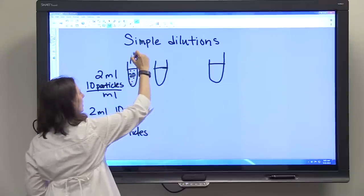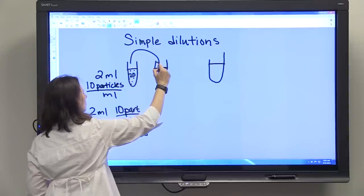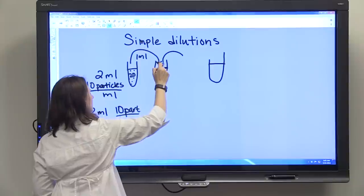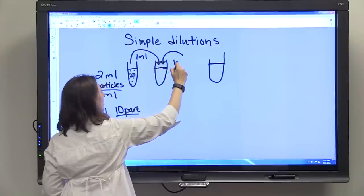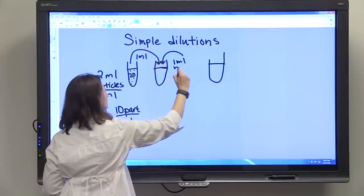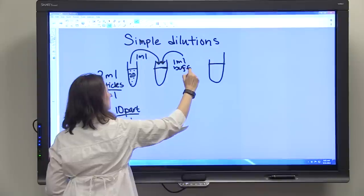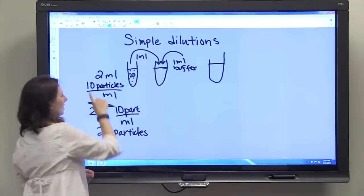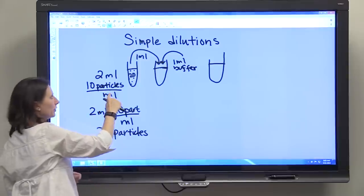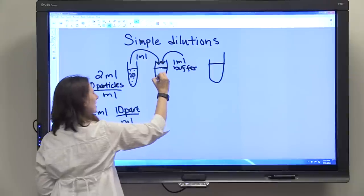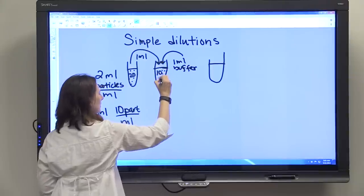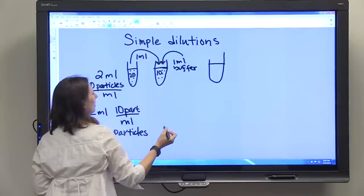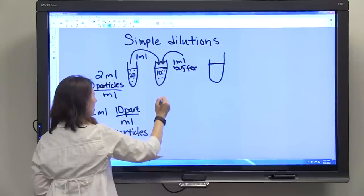If we take 1 ml of this solution and transfer it into a test tube that's got 1 ml of buffer, we're transferring 1 ml. There's 10 particles in 1 ml, so we've put 10 particles in here, and we have a total volume because we added 1 ml of buffer, of 2 ml's.